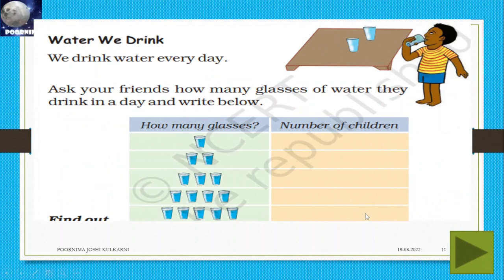Water we drink. We drink water every day. Ask your friends how many glasses of water they drink in a day and write below. How many glasses? Number of children: one glass — three; two glasses — four students; three glasses — five students; four glasses — twenty students; five glasses — seven students.